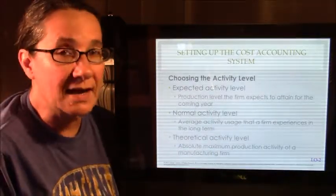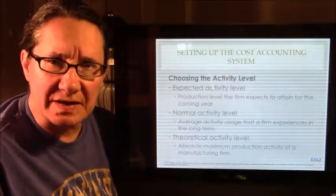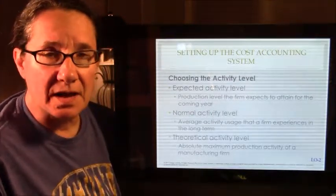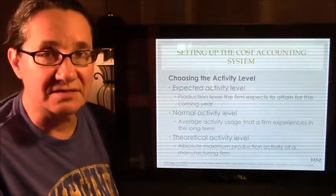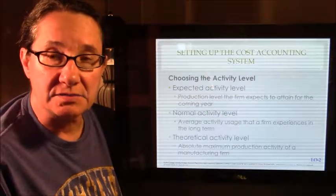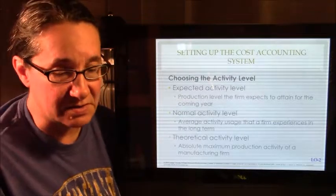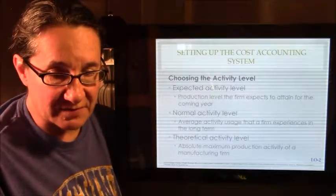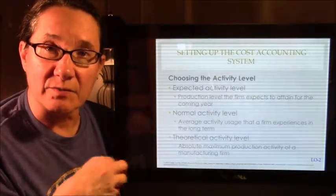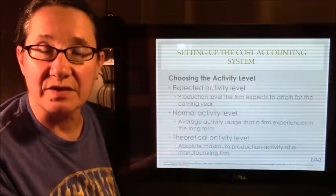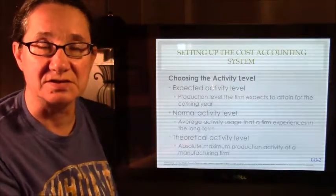When we estimate our overhead rates, we say we think we're going to spend about this much on overhead. And we're going to apply it using some activity, like labor hours or machine hours or whatever, we're going to apply that rate using some cost driver of some kind. And we divide it. We say we think we'll use 25,000 machine hours this year or 50,000 machine hours this year.